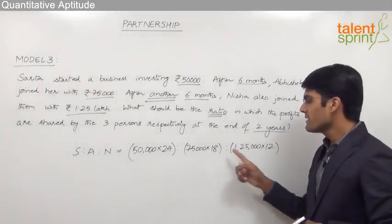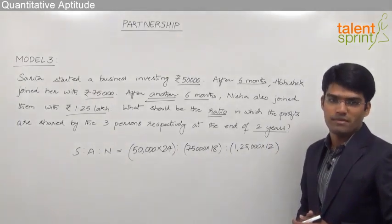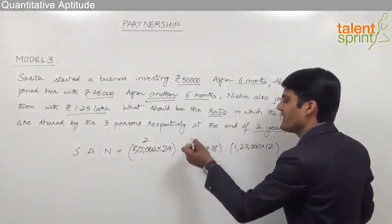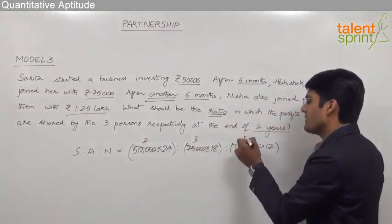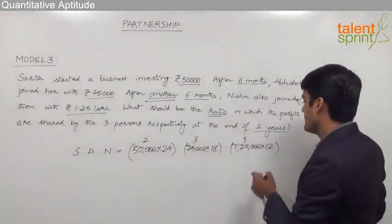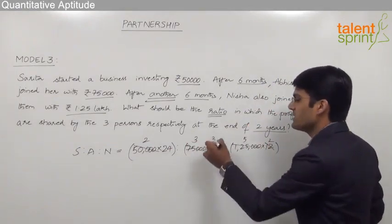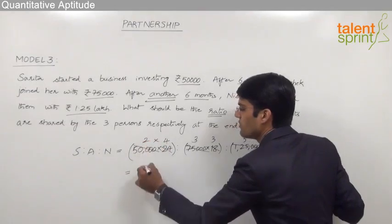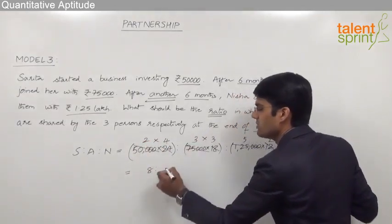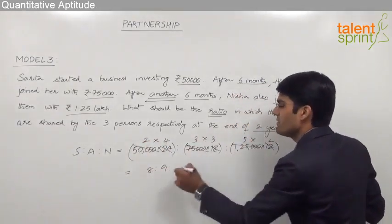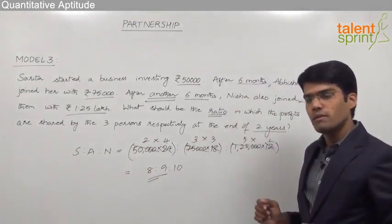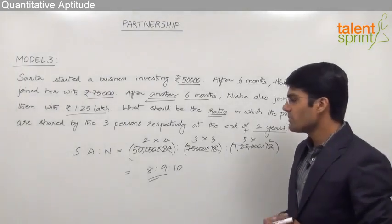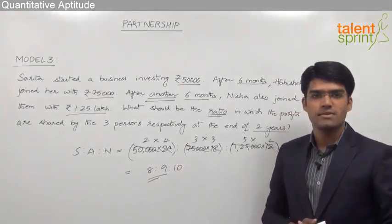This gives us the ratio in which they should share the profits. By simplifying, we get 25,000 × 2, 25,000 × 3, and 25,000 × 5, combined with 6 × 2, 6 × 3, and 6 × 4. So the ratio becomes 2 × 4 = 8, 3 × 3 = 9, and 5 × 2 = 10. Therefore, the ratio in which Sarita, Abhishek, and Nisha should share the profits is 8 : 9 : 10.